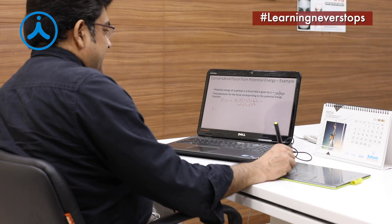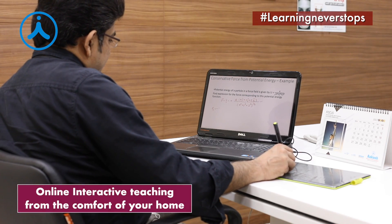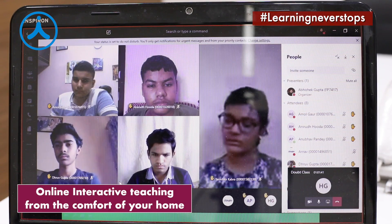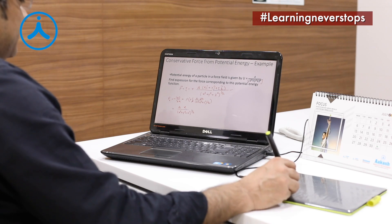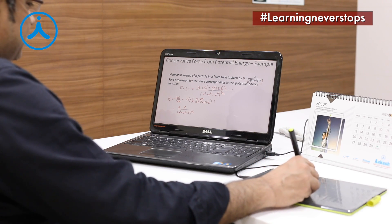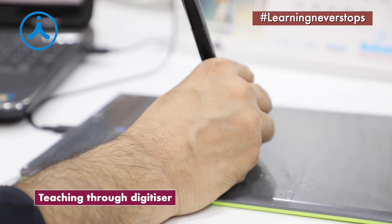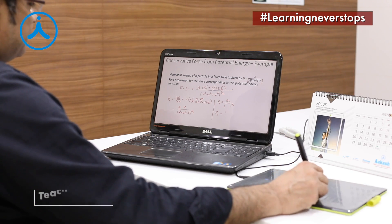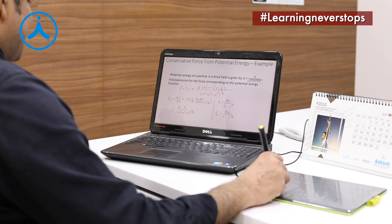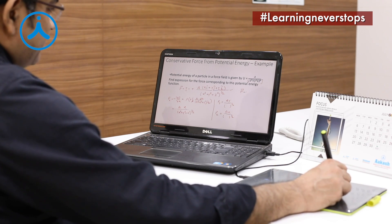I find the x component of the force which is given by -dW/dx. Similarly we will get Fy and Fz. Fy will be -dW/dy and Fz will be -dW/dz. So combining these, F equals Fx i-cap plus Fy j-cap plus Fz k-cap. We will get the required result.